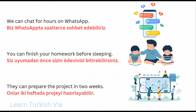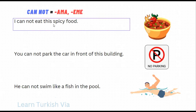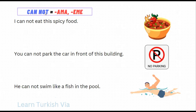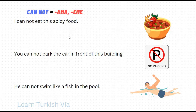Now let's continue with the negative sentences. Instead of 'cannot', we are going to use 'ama' or 'eme'. This 'ma' and 'me' are the negative suffix, and 'can' becomes a single vowel – 'a' or 'e' – when we use it as 'cannot'. Let's see how.